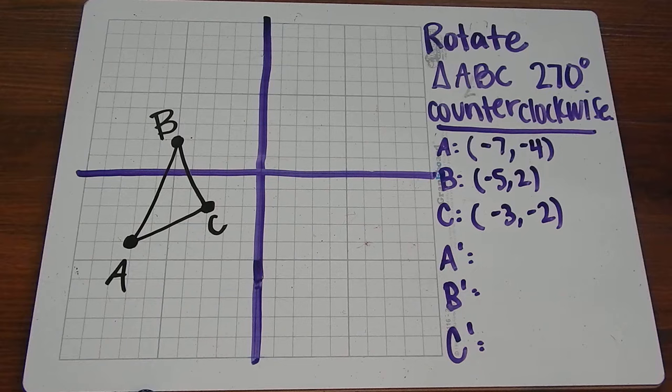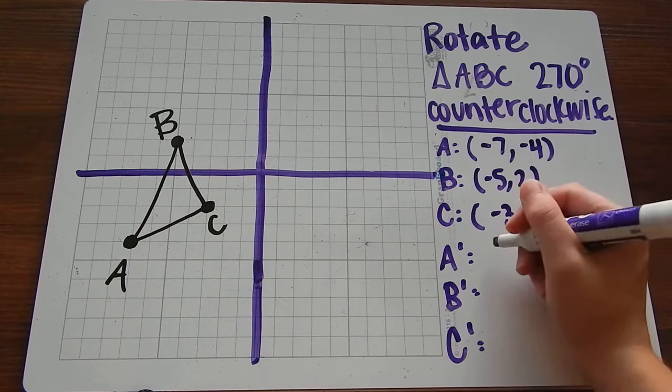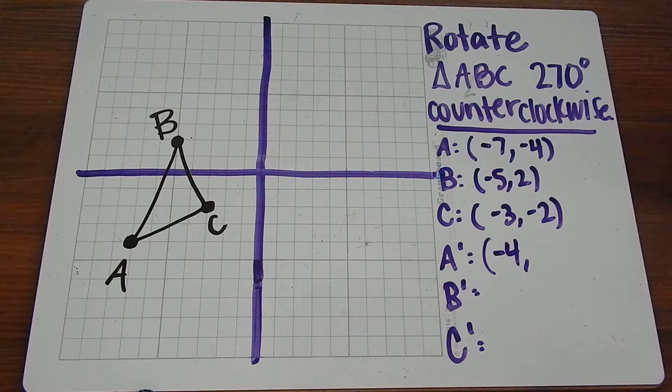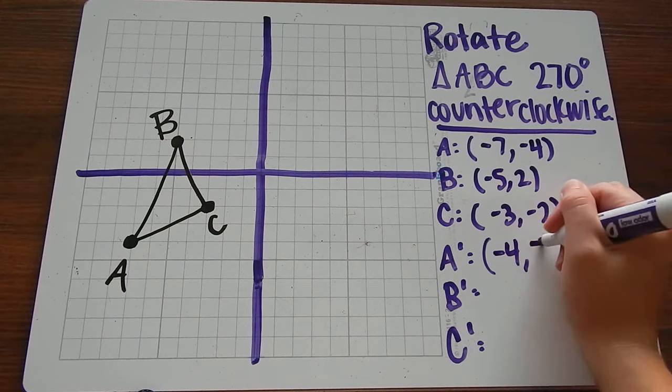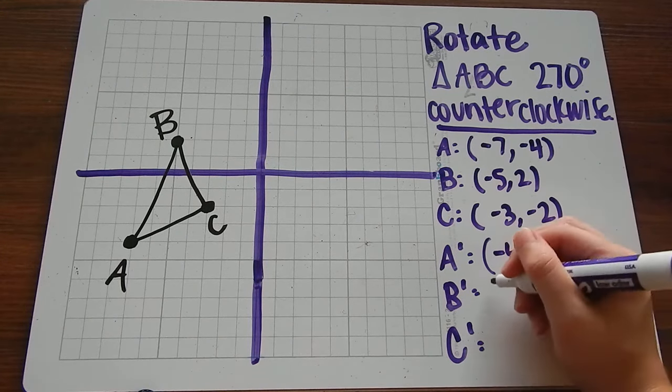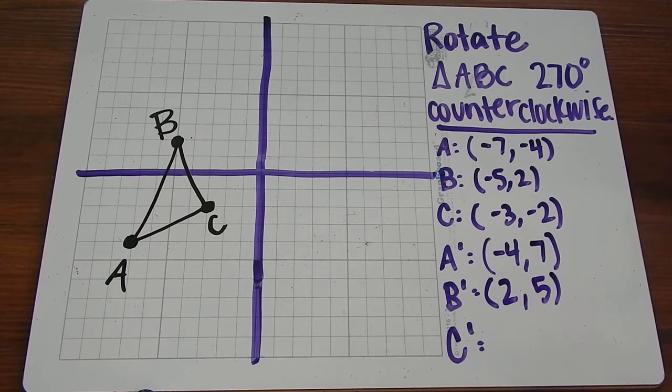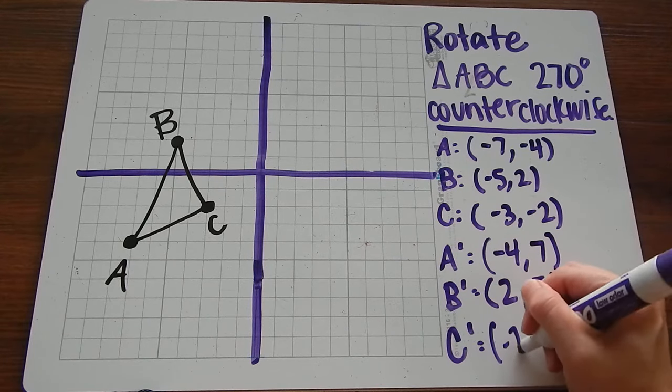So our rule for rotating 270 degrees is (y, -x). So we're going to keep the y, now it goes first. The x, we're going to change the sign, and that's our new y. So again, y, negative x. And y, (-2).